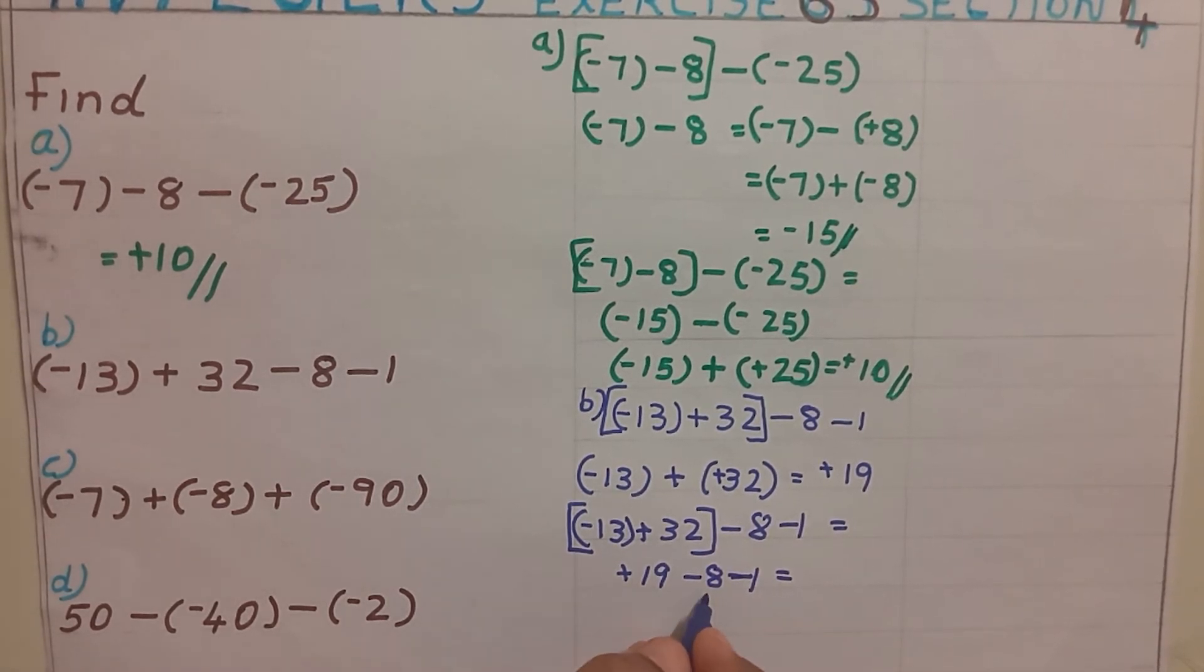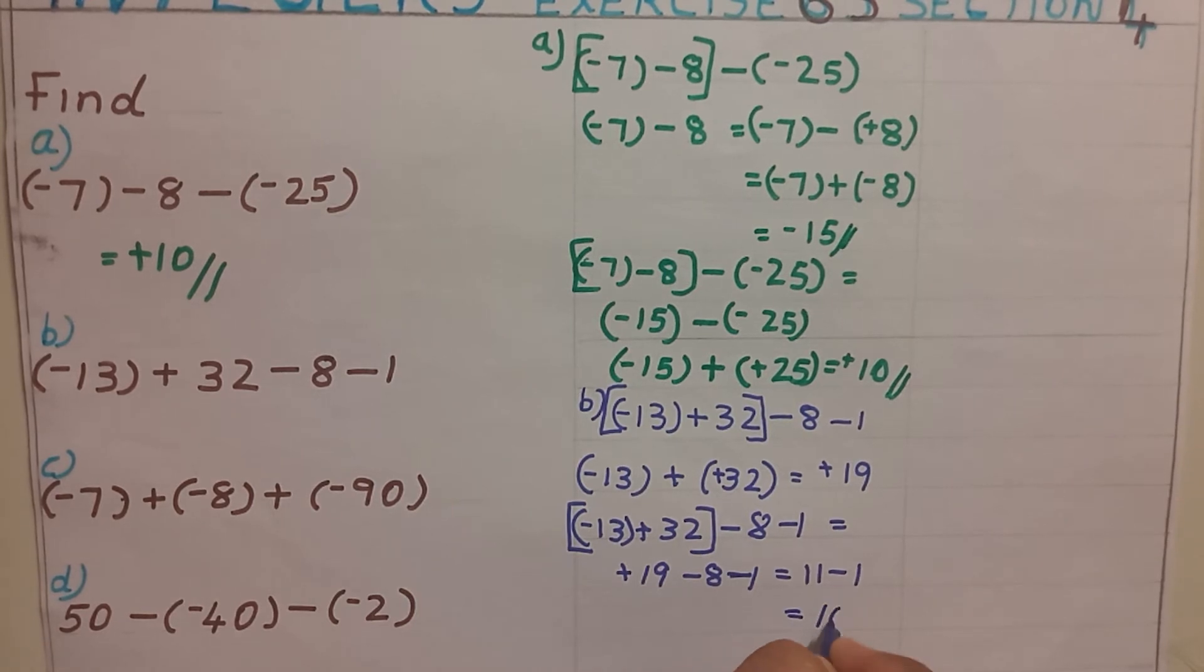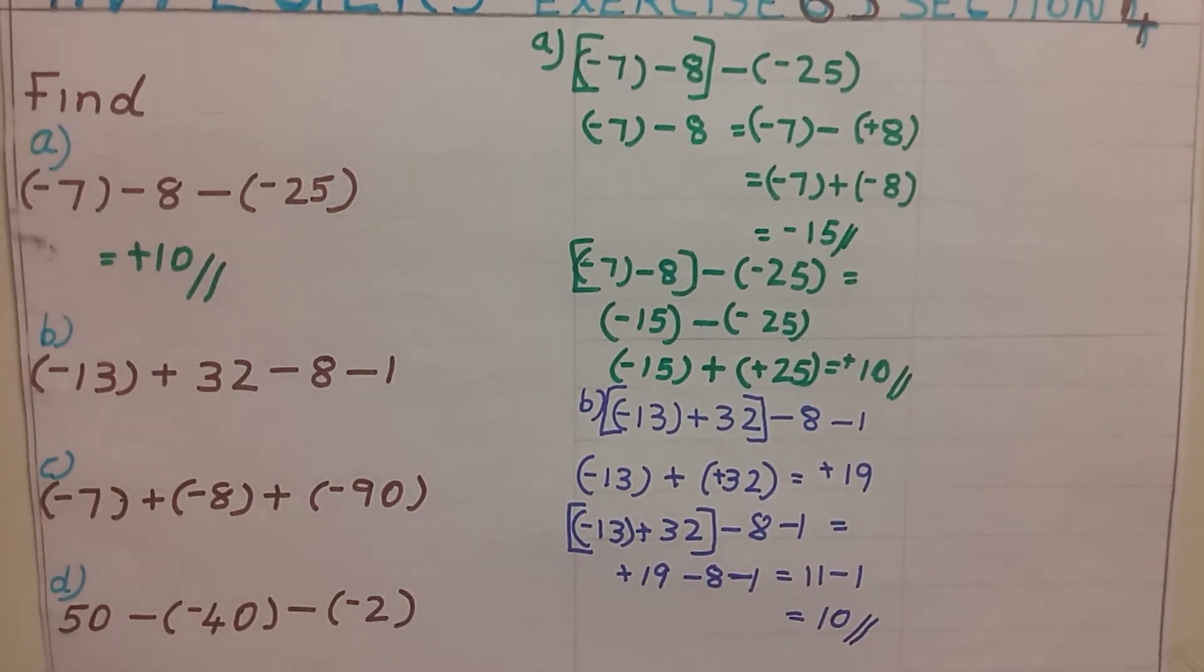19 minus 8, that is 11. 11 minus 1. 1 is remaining here. So 11 minus 1, answer 10.